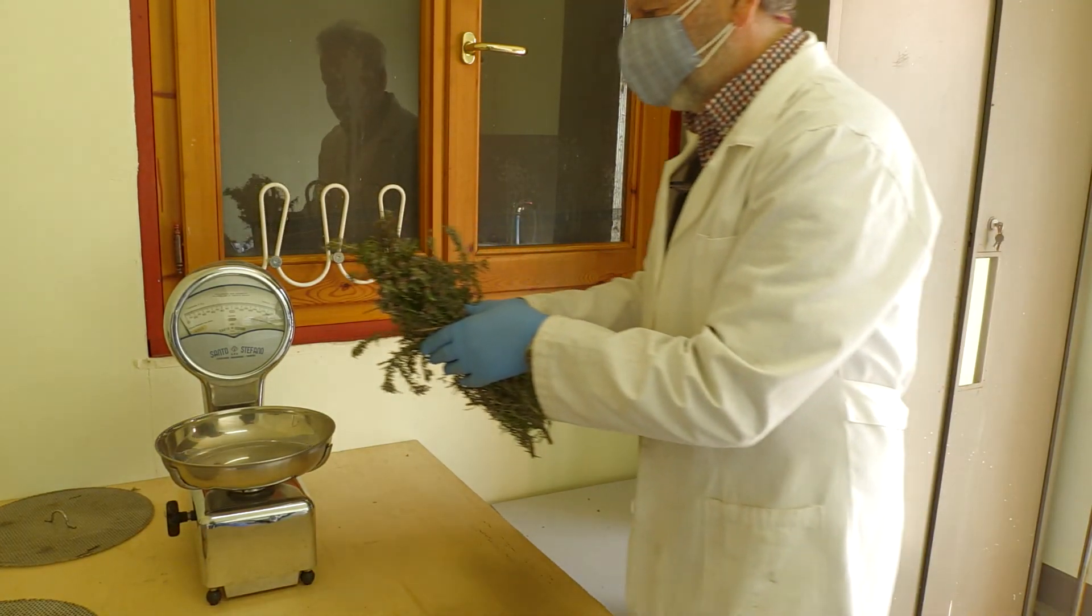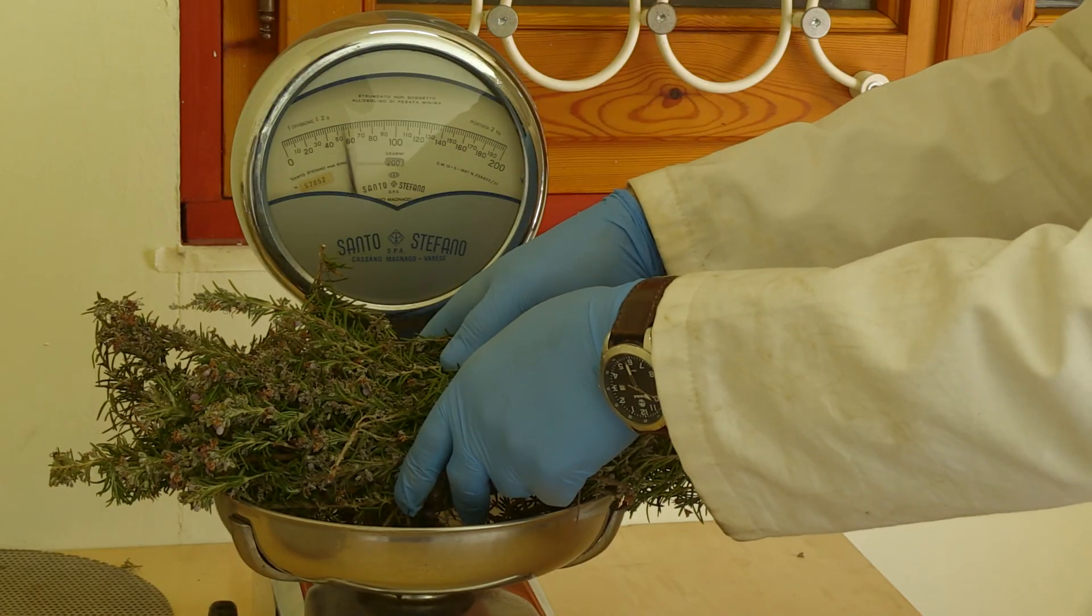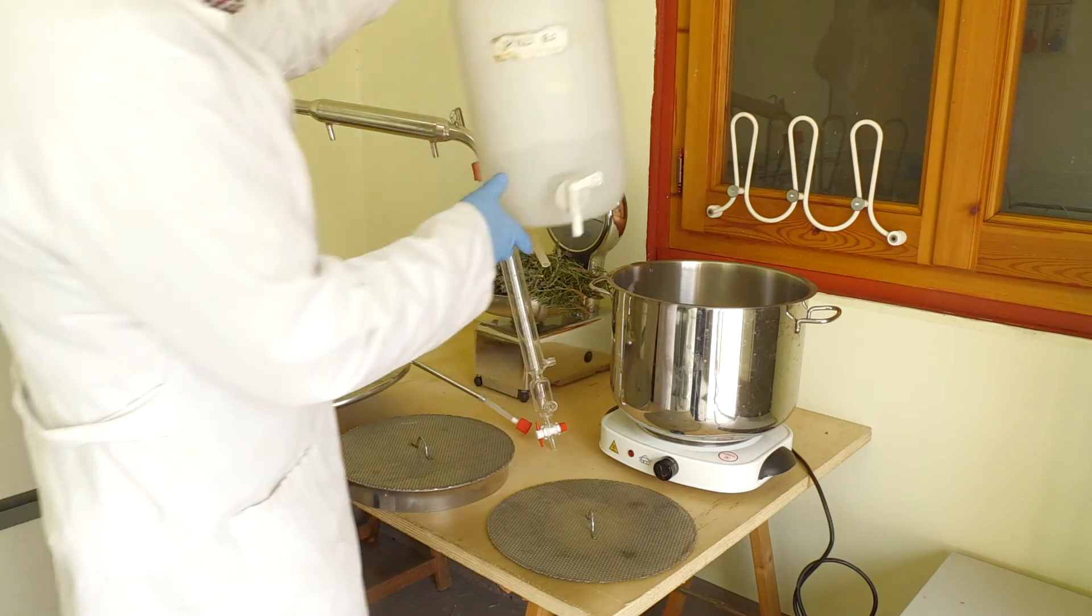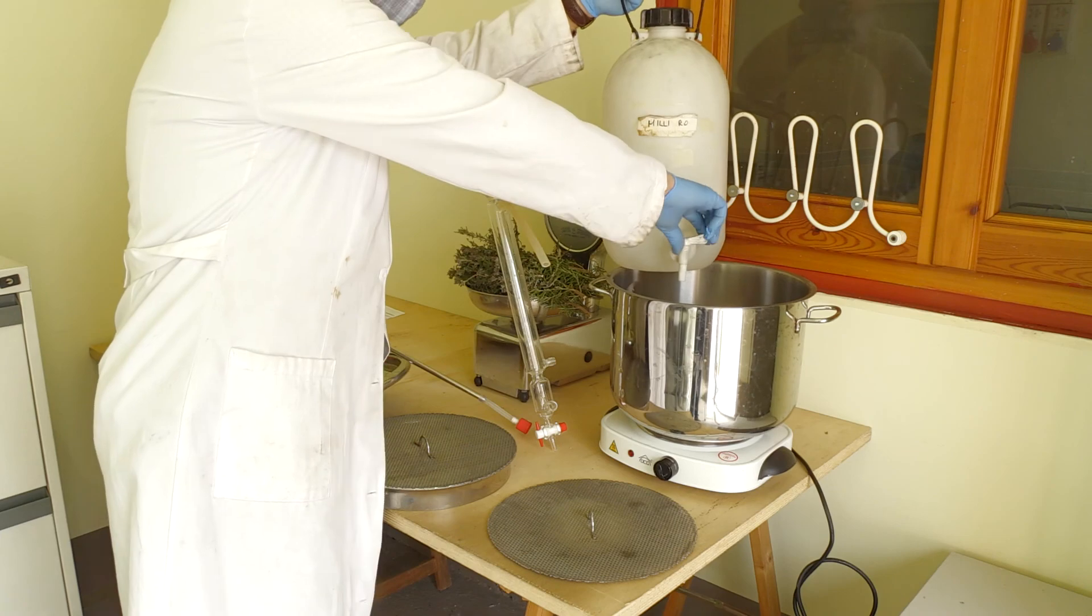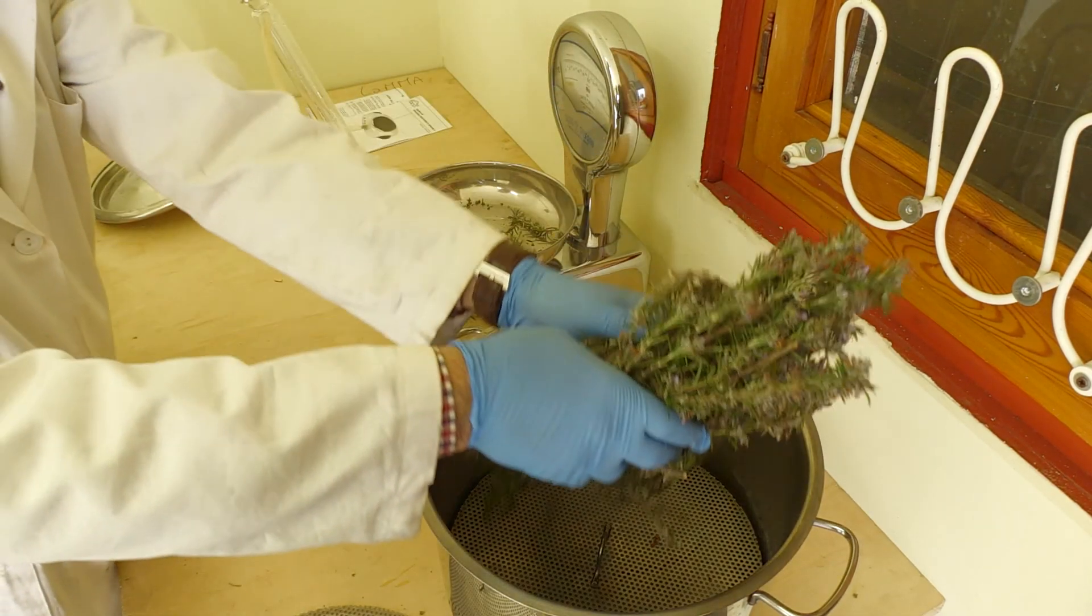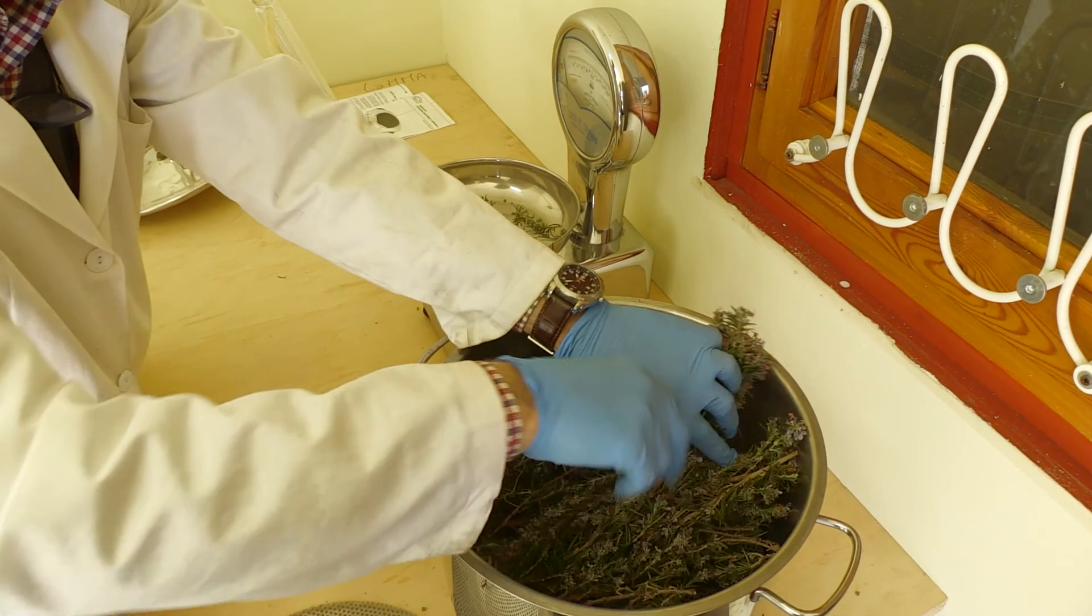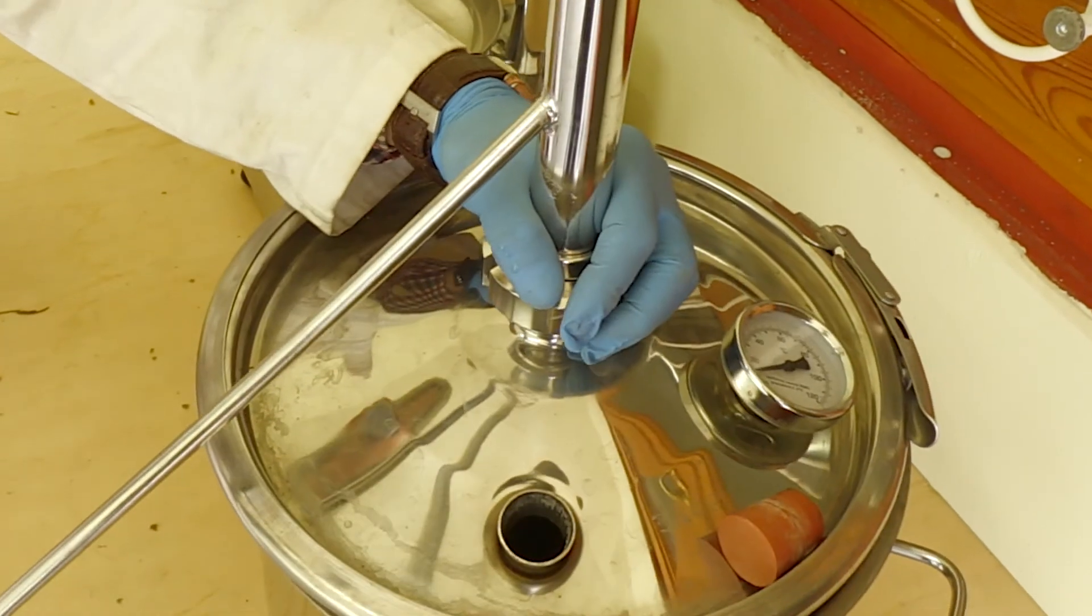The material must be weighed to estimate the extraction yield of the distillation process. After water addition, rosemary twigs are put on a grid at the bottom of the distillator and water is brought to boiling point.